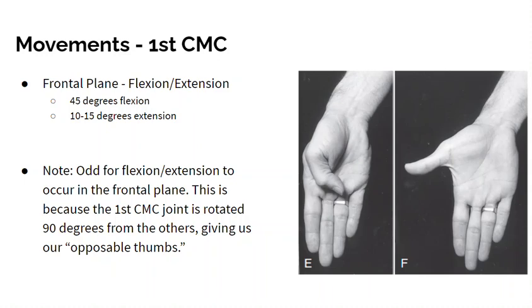When looking at your CMC, or carpometacarpal, or the saddle joint of your thumb, in the frontal plane you have flexion and extension. This is because your thumb is about 90 degrees out of phase. So here's flexion and then extension.